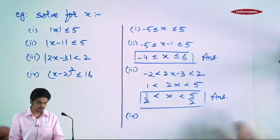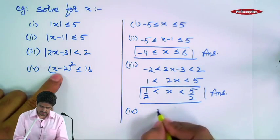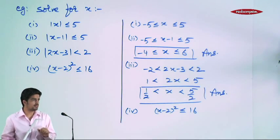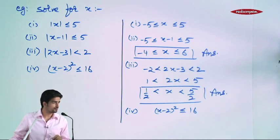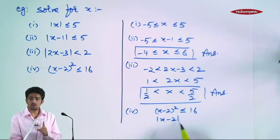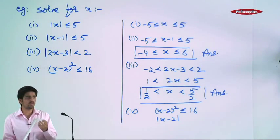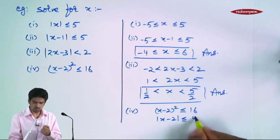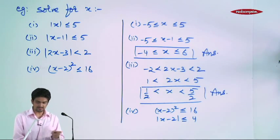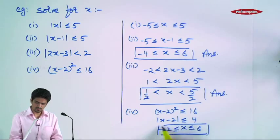4th part: I am using mod. X minus 2 whole square is less than equal to 16. Kyonki dono sides positive hain, hum dono sides pe square root le sakte hain. Square root lene pe, mod of x minus 2. Always remember: square root of x² is not x, it is mod x. So, kisi bhi cheez ka square ka square root lene pe aapko mod of that thing milega — is less than equal to 4. Aage aap kar sakte hain. So, x minus 2 lies in minus 4 to 4. So, x lies in minus 2 to 6. This is your answer.